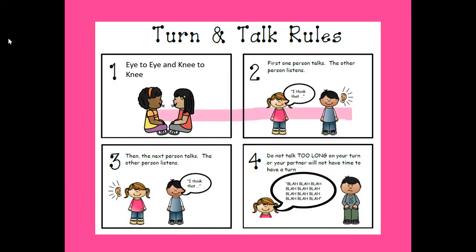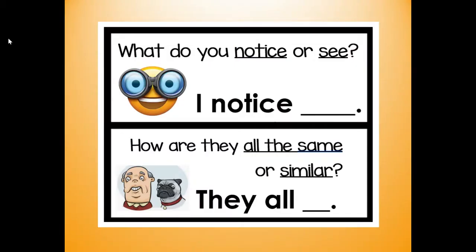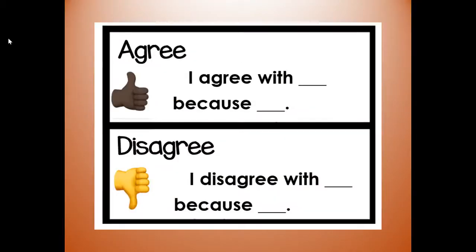Let's get started with our turn and talk rules. If you have a partner at home, you're eye to eye and knee to knee. First one person talks and the other person listens, then the next person talks and the other person listens — do not talk too long or your partner won't have time for a turn. For each group of pictures I'll ask: what do you notice or see? Say 'I notice' or 'I see.' Then I'll ask how they're all the same or similar. You can say 'I agree because' or 'I disagree because' — it's okay to have a different opinion.